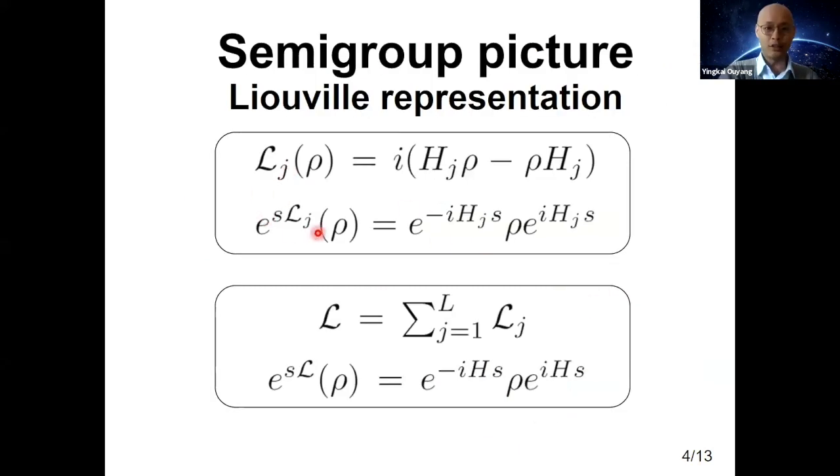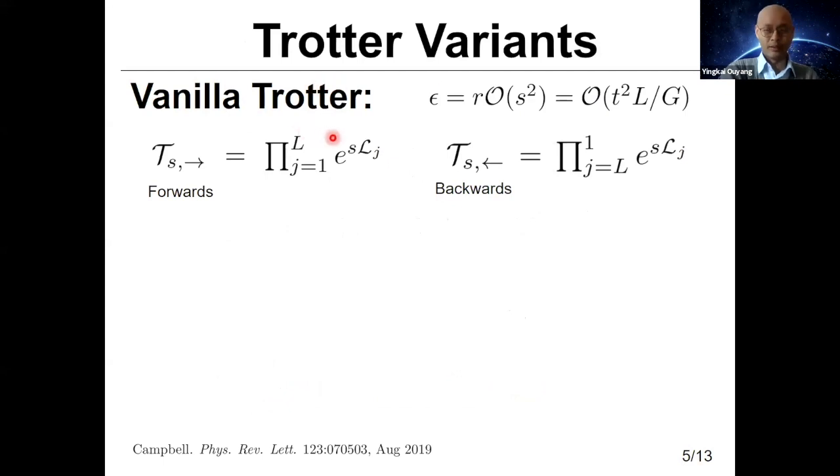I would use this notation to represent unitary operators called the semigroup picture, but really it's a way to compress notation. If we are doing quantum simulation on a density matrix rho, you have to multiply the left side with a unitary and the right side with a unitary. This notation is quite cumbersome, so we use this exponential of this Liouville operator. For the ideal quantum channel, instead of writing e to the minus iHs rho e to the iHs, we use the exponential of s times L.